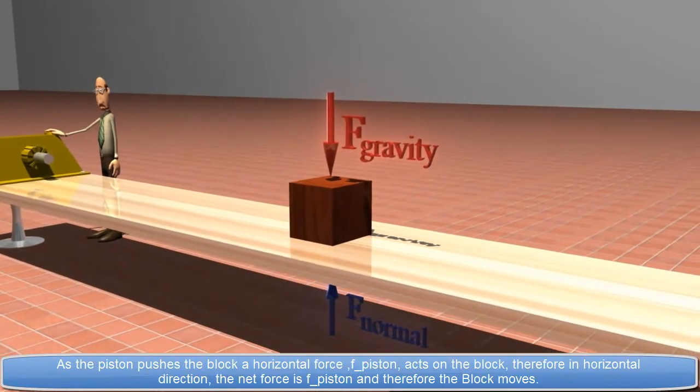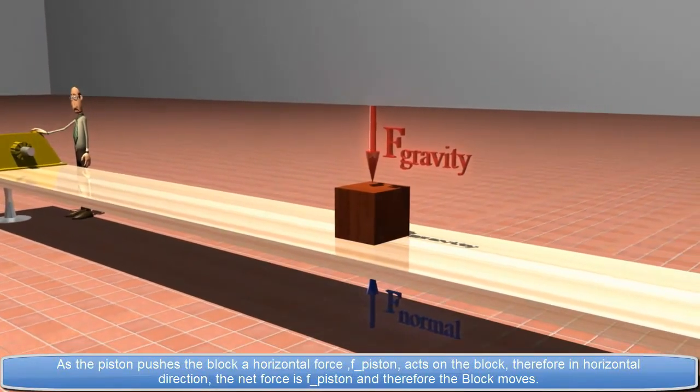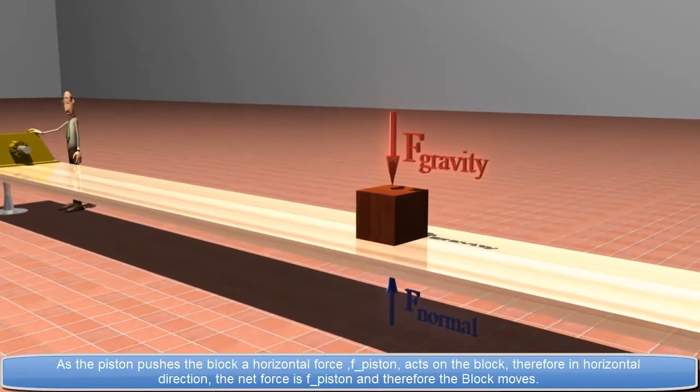Therefore, in horizontal direction, the net force is F piston and therefore the block moves.